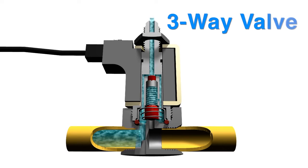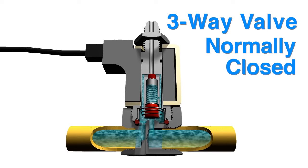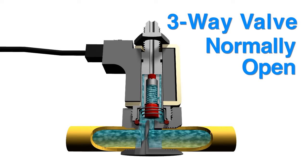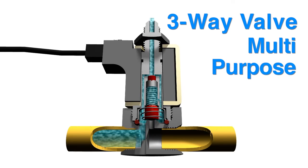A three-way solenoid valve has three pipe connections and two orifices, one of which is always open, allowing for two paths of flow. There are four common types of three-way solenoid valves: three-way normally closed, three-way normally open, three-way directional control, and three-way multipurpose.